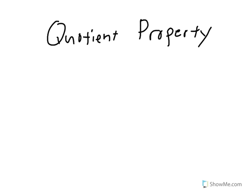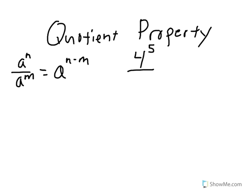Now let's take a look at the quotient property, which for exponents says that a to the power of n divided by a to the power of m is equal to a to the power of n minus m. With numbers, this would be something like 4 to the power of 5 divided by 4 to the power of 2 equals 4 to the power of 5 minus 2, which is 3.